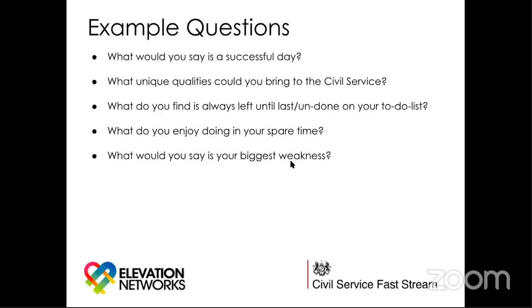For example, you might come from a diverse background and feel the Civil Service isn't as reflective of the society it serves. You're passionate about diversity and inclusion and want to ensure the needs of everyone in society are met. You could say that by joining the Fast Stream, you hope to contribute towards the Civil Service meeting the needs of wider society. The trick is to spend some time listing bullet points of your reasons for wanting to work in the Civil Service, then choose the one that best articulates or covers all the others.